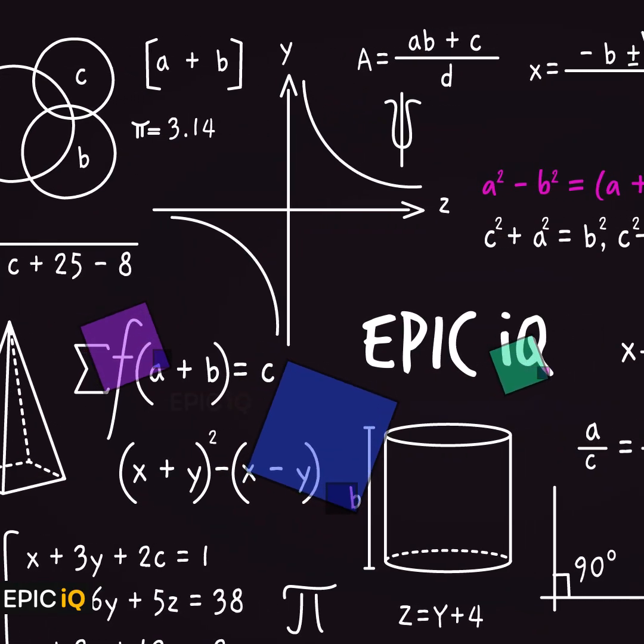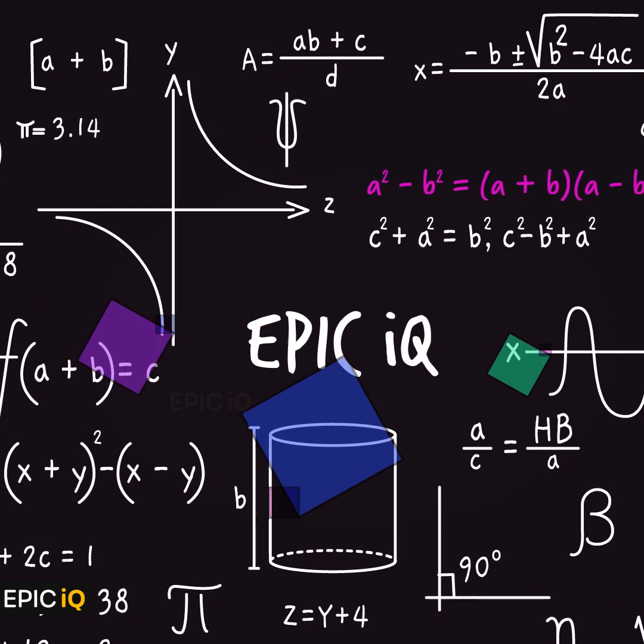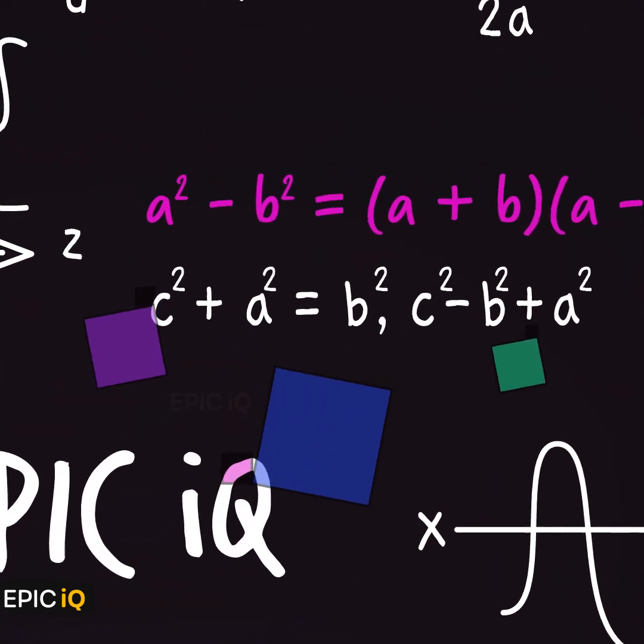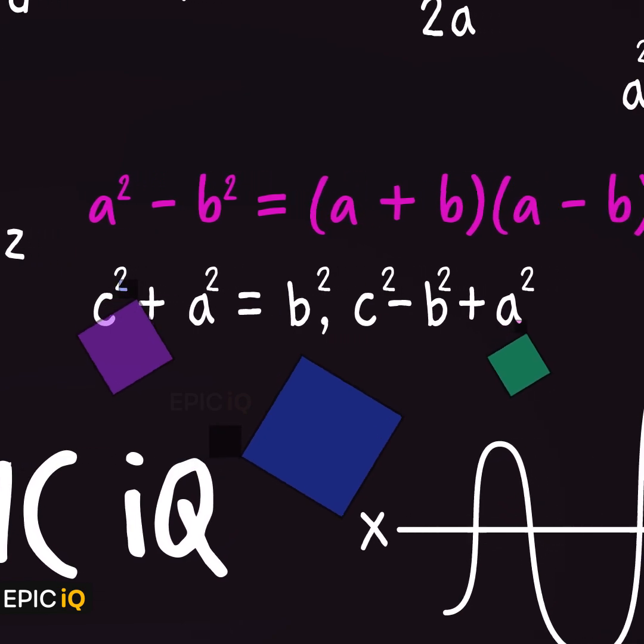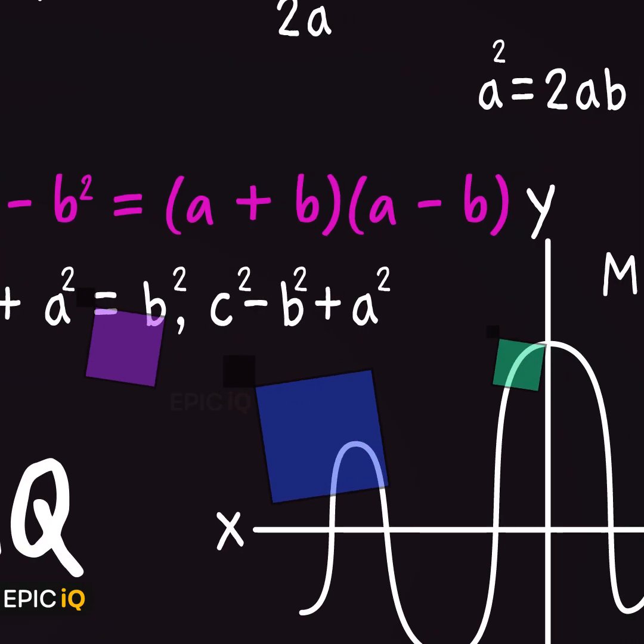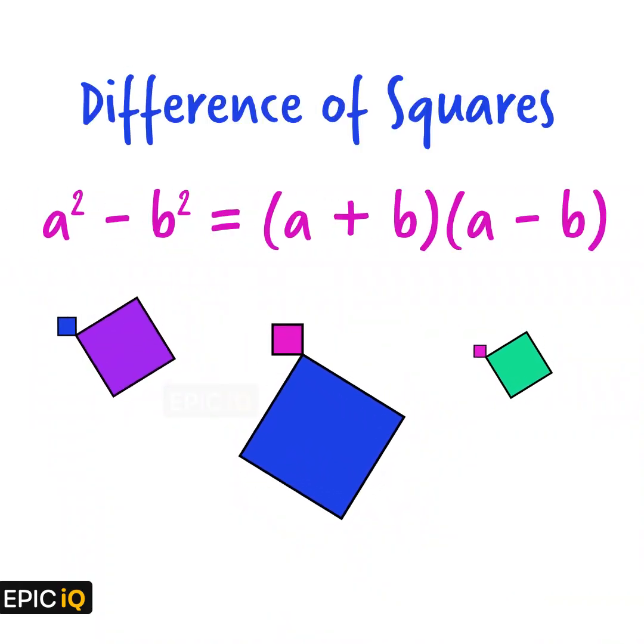Hello everyone. This is EpicIQ and in this video, we will discuss two visual proofs of the famous algebraic equation: a square minus b square equal to a plus b multiplied by a minus b. This famous equation is also called difference of squares.